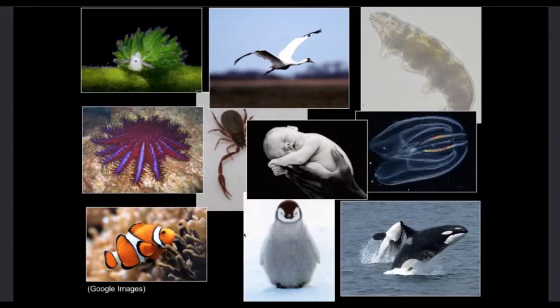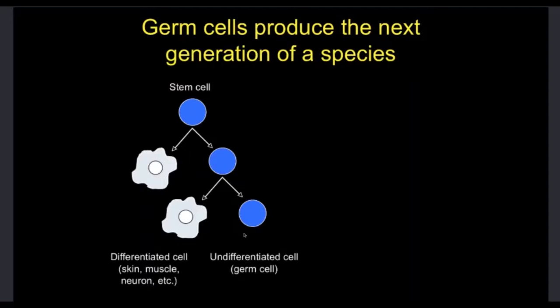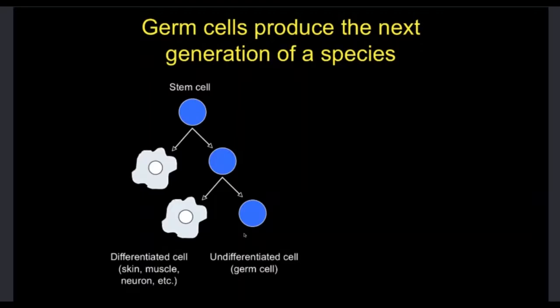And one of the cell types that are particularly interesting are called germ cells. Germ cells are the cells that can give rise to the next generation. They are able to make any other type of cell. And when a human is developing, or a worm or a tardigrade, there are special cells set aside during development that will make only germ cells.